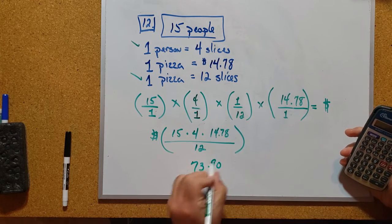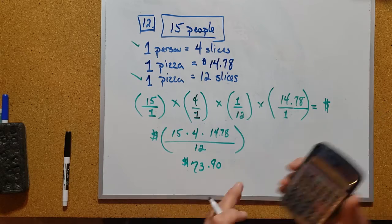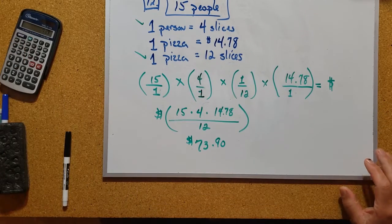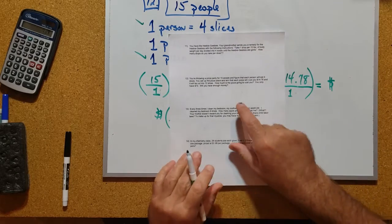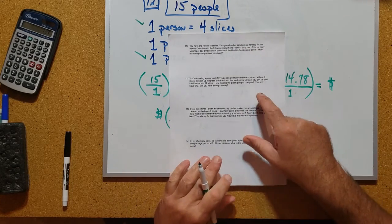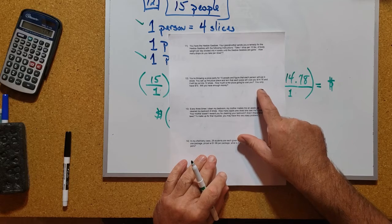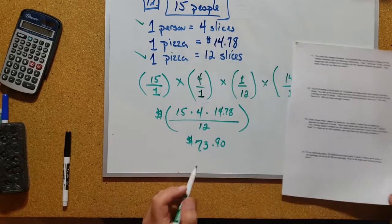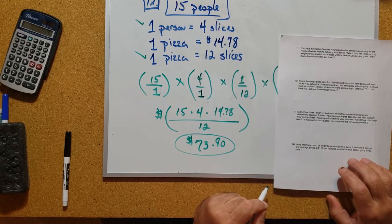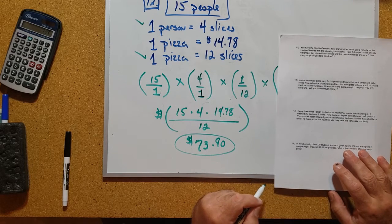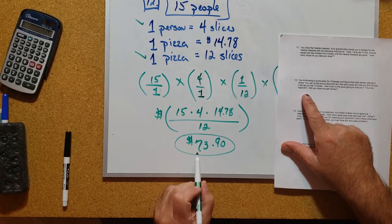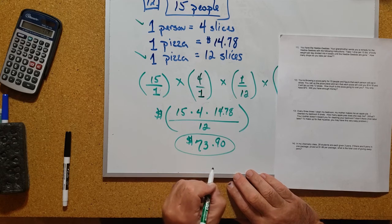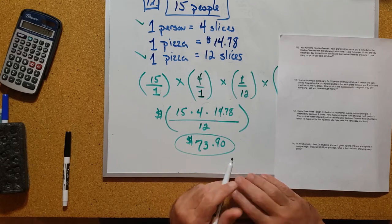If you go back and read the last part of this question, it tells you you only have $70. Will you have enough money? Well no, you don't. How much money are you short? If you have $70 but we've just figured it's $73.90, obviously you're short by $3.90.